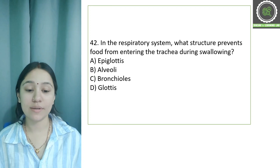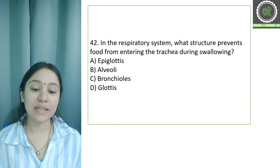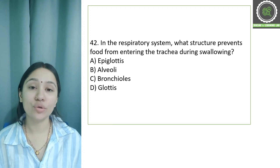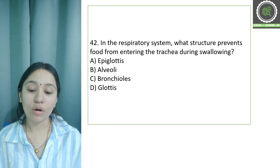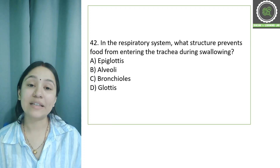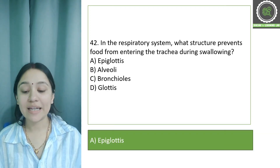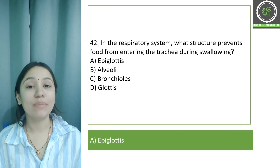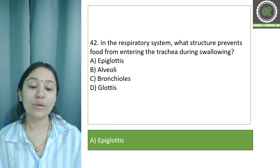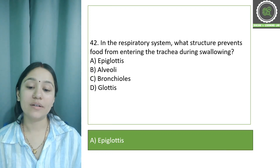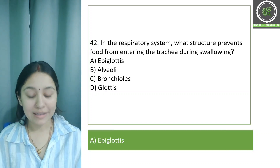Question number 42: In the respiratory system, what structure prevents food from entering the trachea during swallowing? Options are: epiglottis, alveoli, bronchioles, and glottis. The correct answer is epiglottis. The epiglottis is a small structure which prevents food particles from entering the trachea.